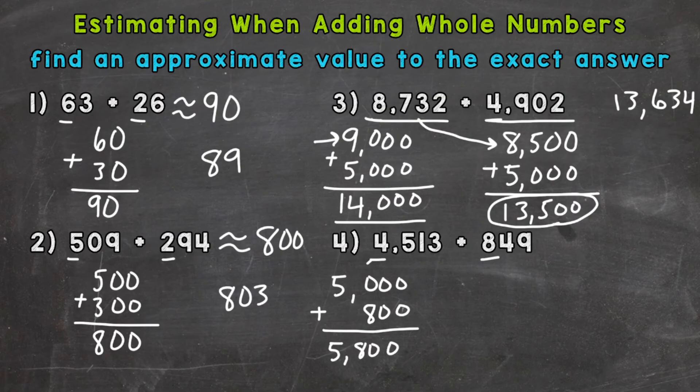Another strategy we could use, we could look at the halfway point here for 4,513 is actually really close to 4,500, closer than it is to 5,000. So this is going to give us a better estimate. Let's use 4,500. And we will keep 849. We'll round that to the front end there and keep it as 800. And we will get 5,300.